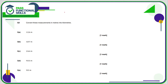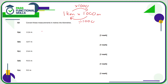Now converting meters into kilometers. One kilometer is 1000 meters, so to go from kilometers to meters we multiply by 1000, and to go from meters to kilometers we divide by 1000. For 1126 divided by 1000, write 1126.0 — 1000 has three zeros so we move the decimal point three positions to the left, making the number smaller. One, two, three — the answer is 1.1260, otherwise known as 1.126.